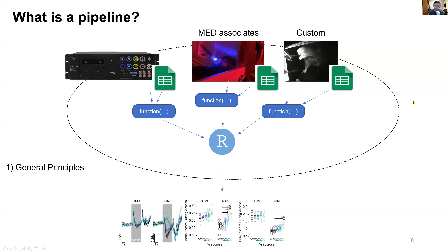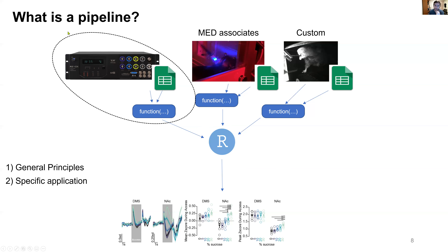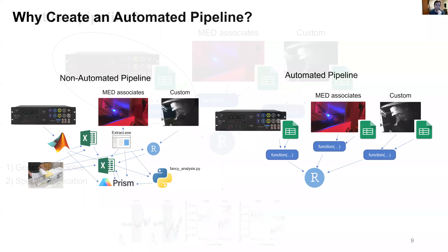The first part of the talk covers general principles for automating any sort of pipeline, and then I want to talk about the specific application of fiber photometry data as a case study. I'm not going to focus on different forms of fitting and normalization — I know we have talks coming — I'll focus more on automation and dynamic data processing. Feel free to interrupt me at any point.